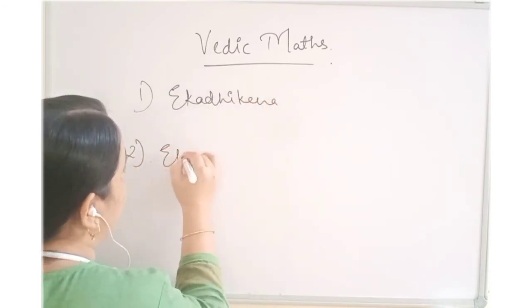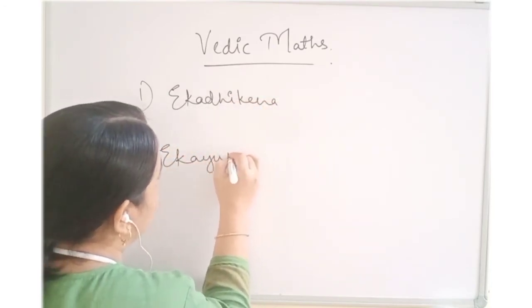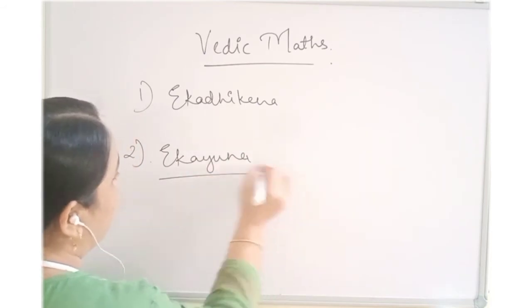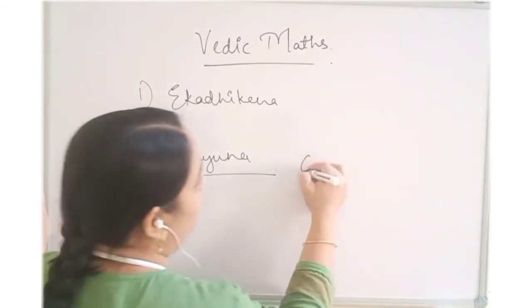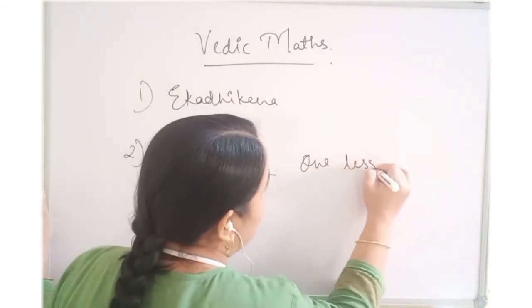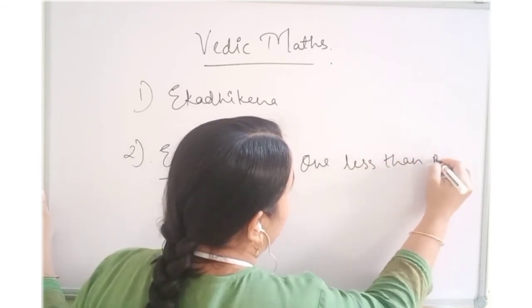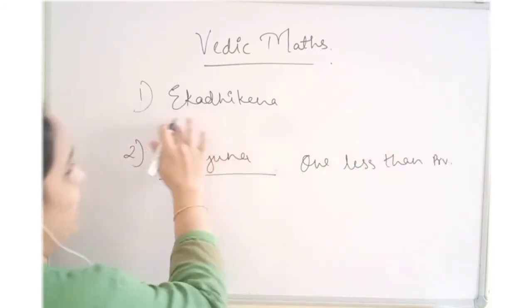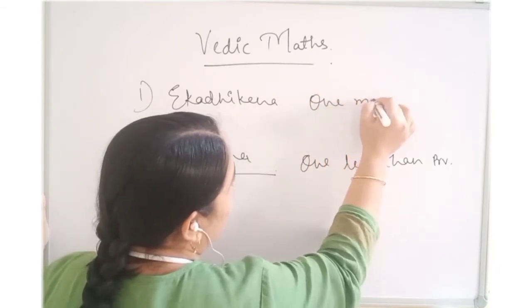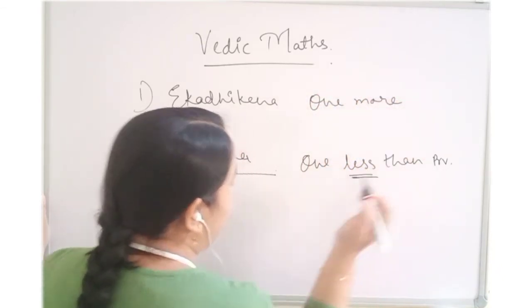Second is Ikayuna. Ikayuna means one less than the previous. It is same as Ikadi Kena. This is one more and this is one less.